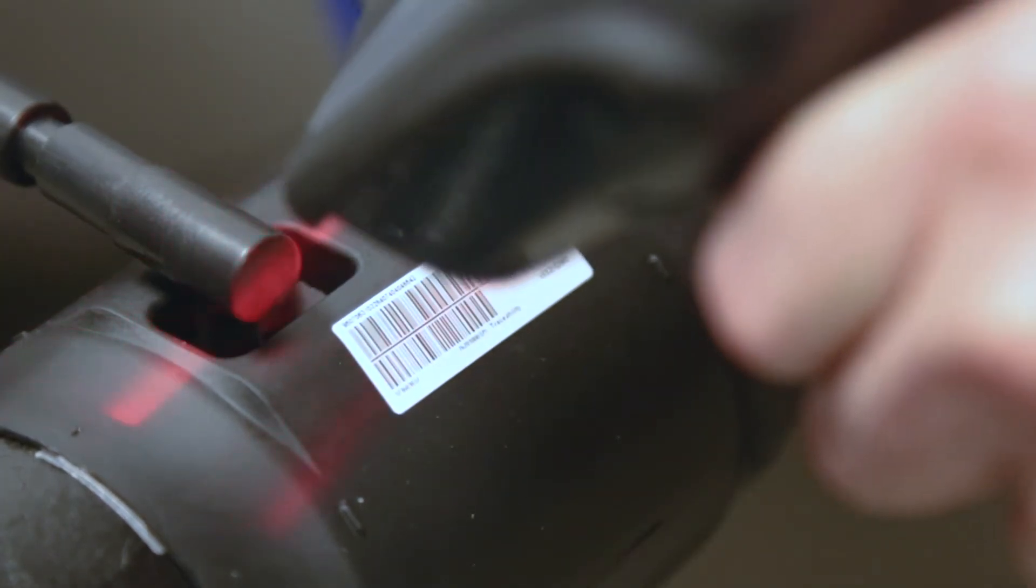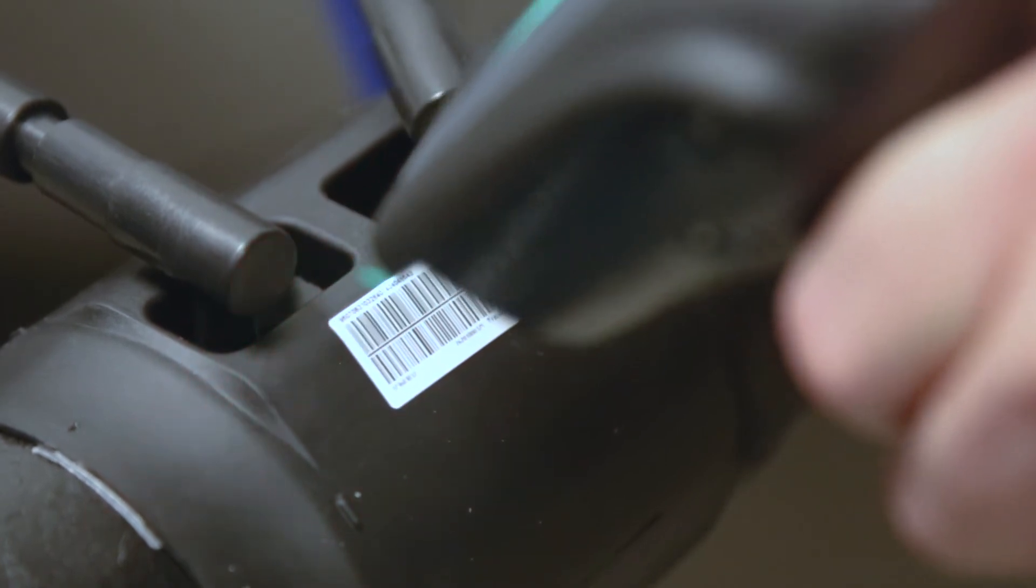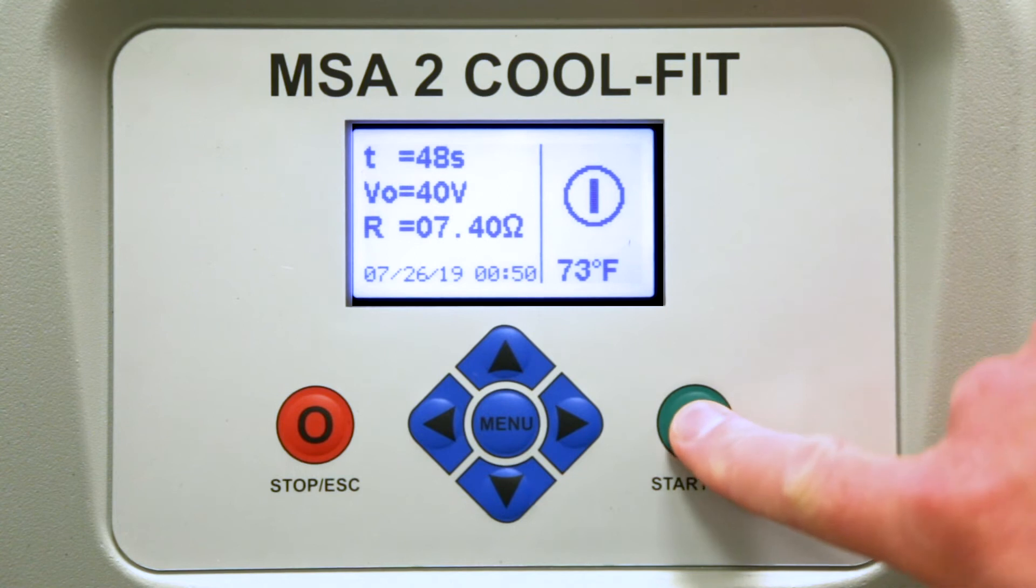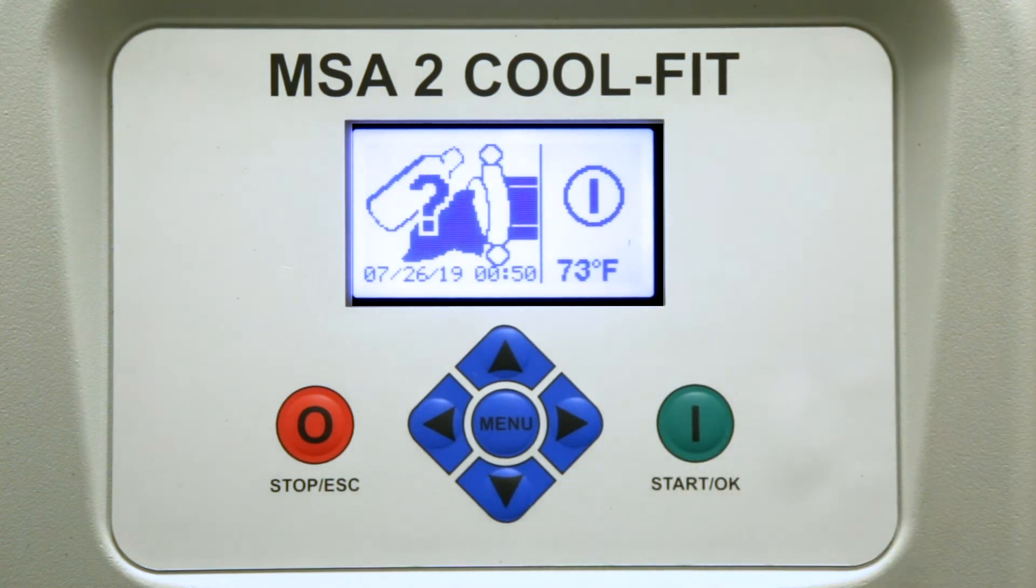Use a scanner to read the barcode to input the welding parameters. Press the green button on the welding machine and follow the fusion steps as shown on the screen. Confirm you've peeled and cleaned the pipe.